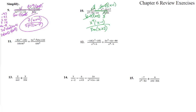Number 11 — since this is division, we flip the second fraction and rewrite it as multiplication, with that guy on top and the other on the bottom. The first numerator is negative 5, and the difference of squares factors as x minus 5 times x plus 5.